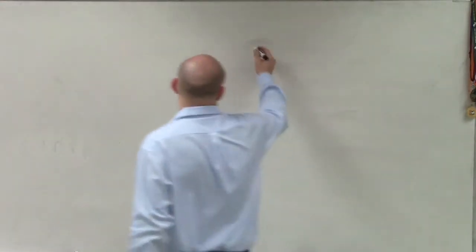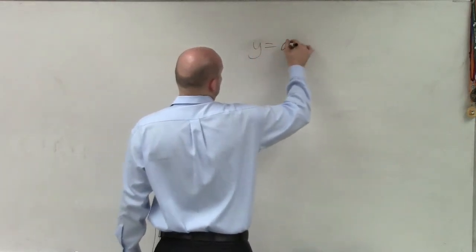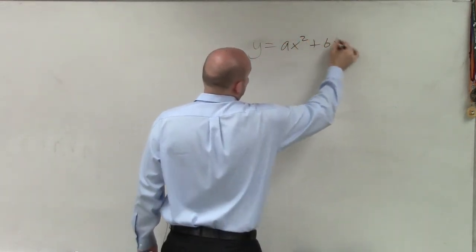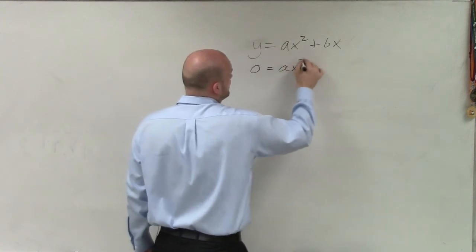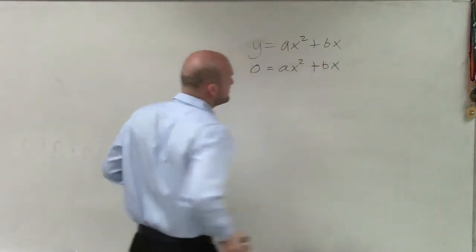So the main important thing that I want you to get when we're looking at equations y equals ax squared plus bx, the main important thing is setting this equal to 0 because we're going to want to use the 0 product property when we factor.